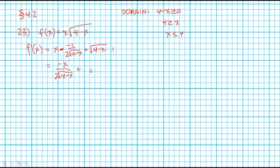...we're going to multiply it by 2 root 4 minus x over 2 root 4 minus x. And then we're going to multiply that by 4 minus x, the old numerator.